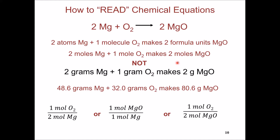The correct mass ratio for this reaction is two times the atomic weight of magnesium, which is 48.6 grams, reacting with one molecular weight of oxygen, which is 32 grams, to make two molecular weights of magnesium oxide, which is 80.6 grams. The sum of the masses on the left-hand side equals the mass on the right-hand side, fulfilling conservation of mass.